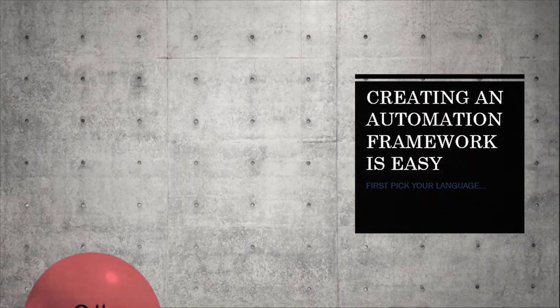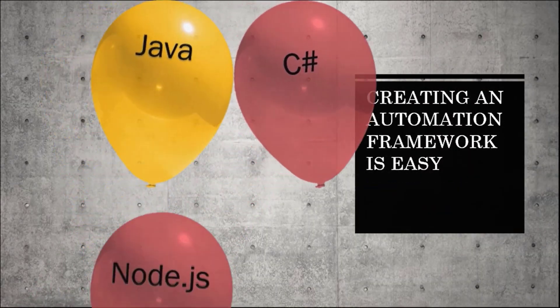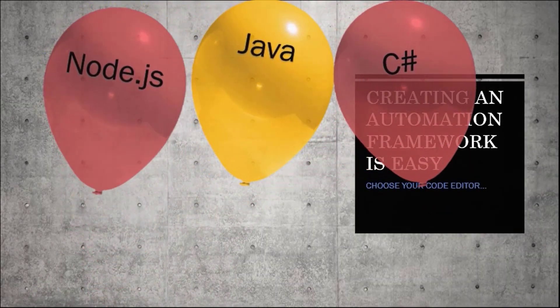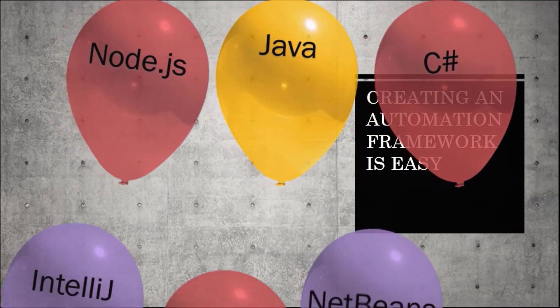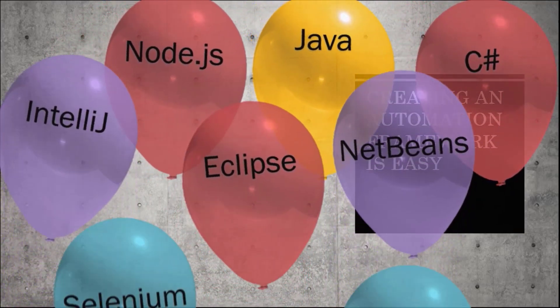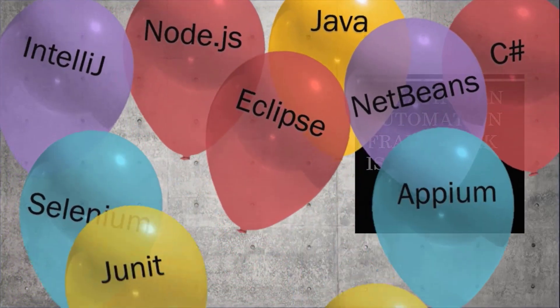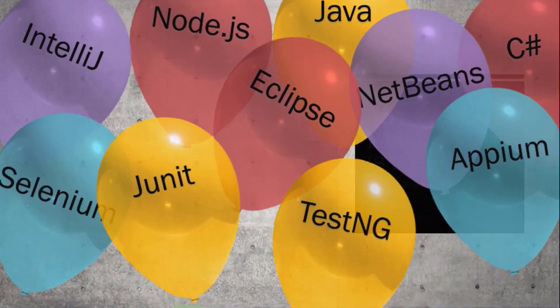Setting up an automation project is easy. Simply choose your programming language, configure the development environment, add the paths to your supporting JAR files, and decide on the annotation test framework.